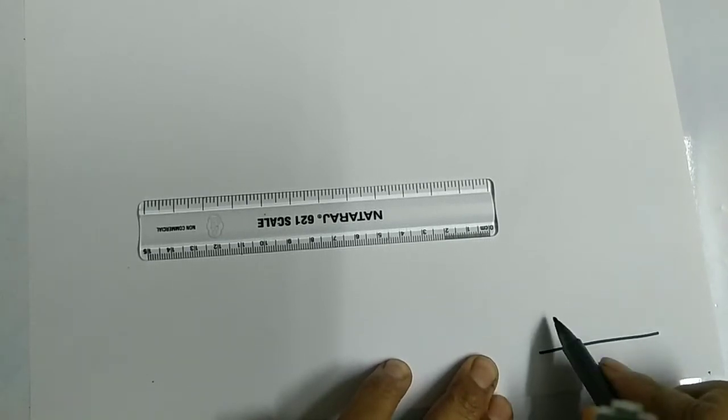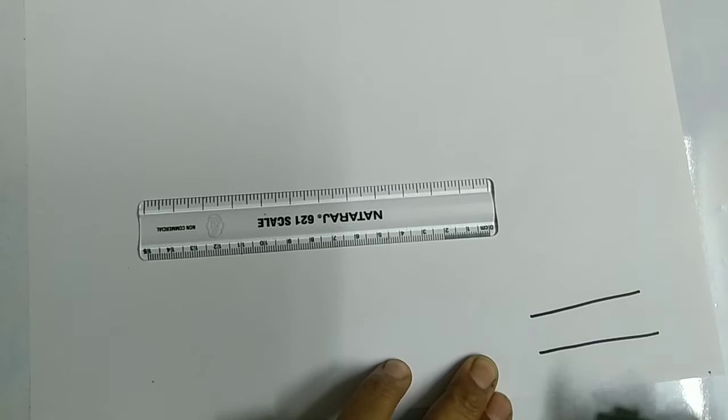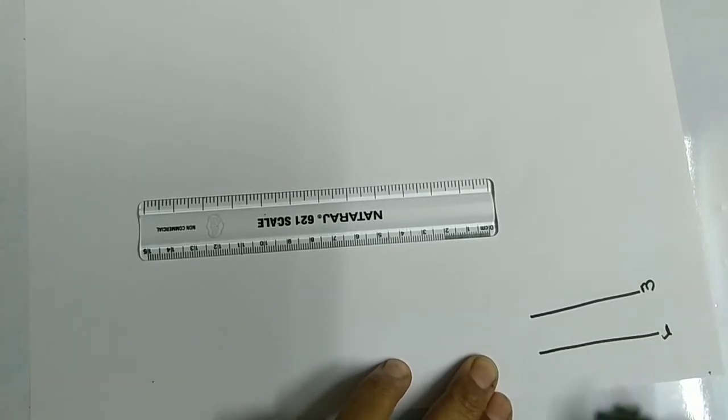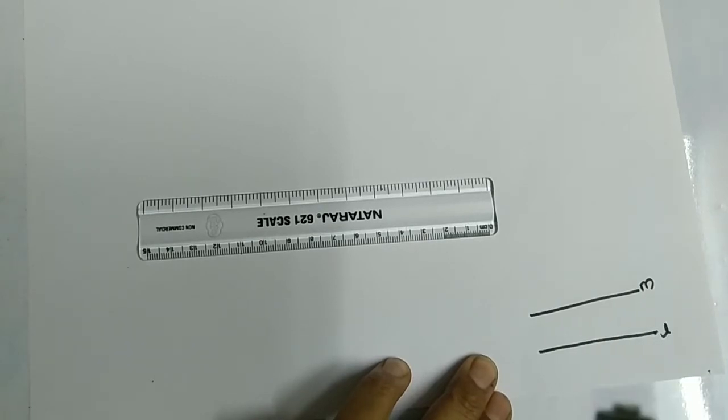Imagine this given line here. We're supposed to draw a line parallel to this. If this is line l, we're supposed to draw line m parallel to line l. Now you might ask,